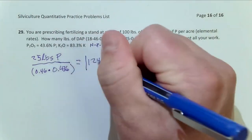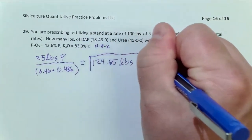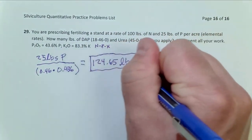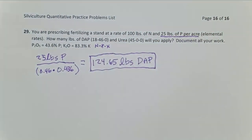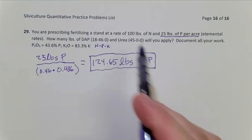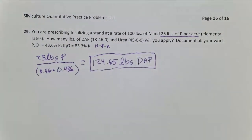So that's half our answer, but well less than half our work. Okay, so we've applied 25 pounds of P per acre. We've done that. That part's over.